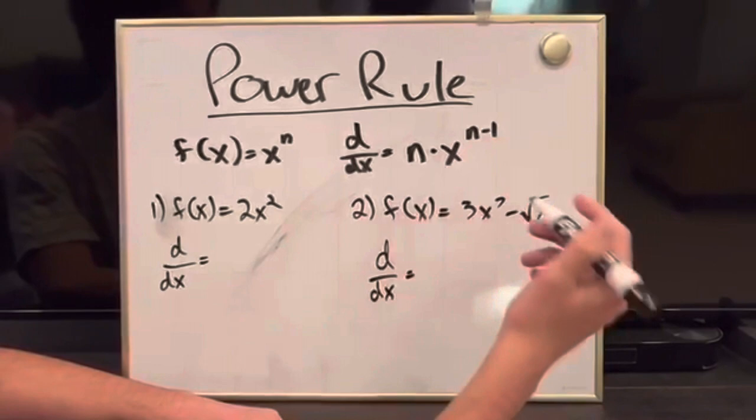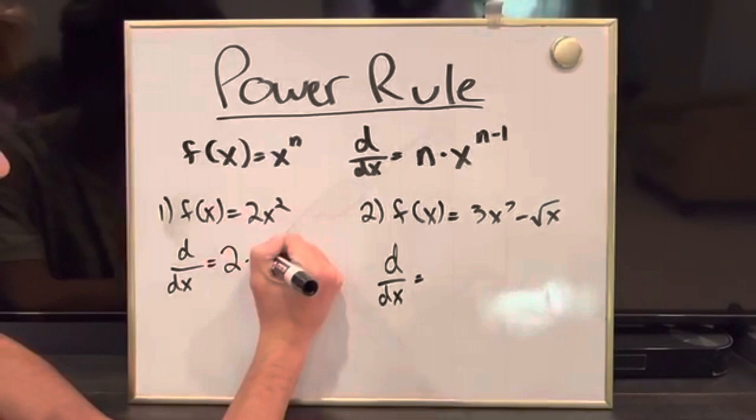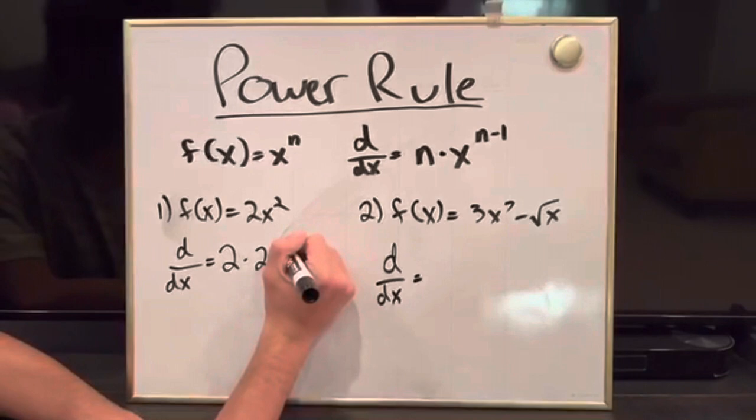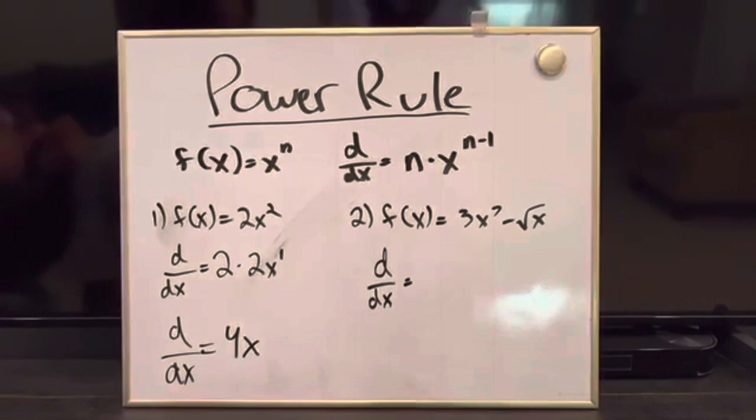The function 2x squared can be rewritten as this. You first start by bringing the exponent to the front — so 2 times 2x raised to the n minus 1, which is 2 minus 1, so it's x to the 1. Then you multiply the coefficients: so it's 4 times x to the 1, and you can get rid of the 1 because it's just the same thing.